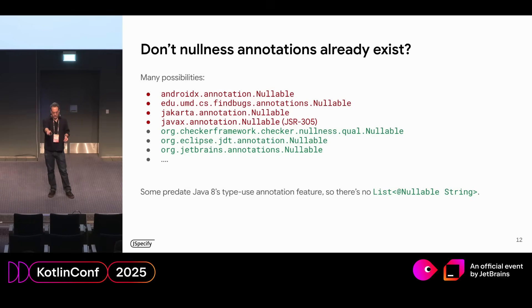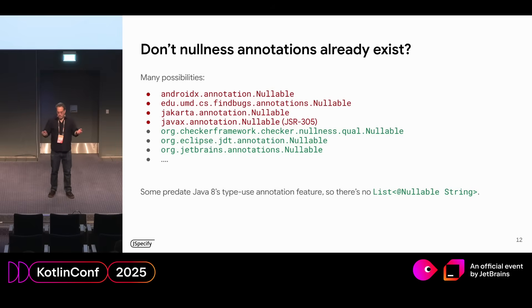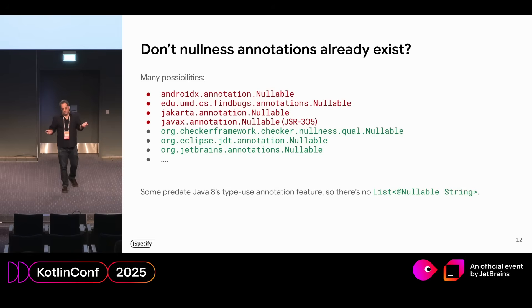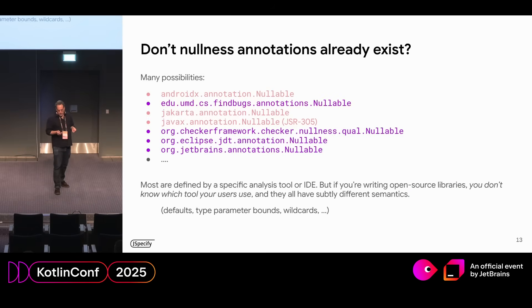All of the ones shown in red — you can't use them to make a list of nullable strings. You can't put that annotation inside angle brackets. So that means it's not really that useful.